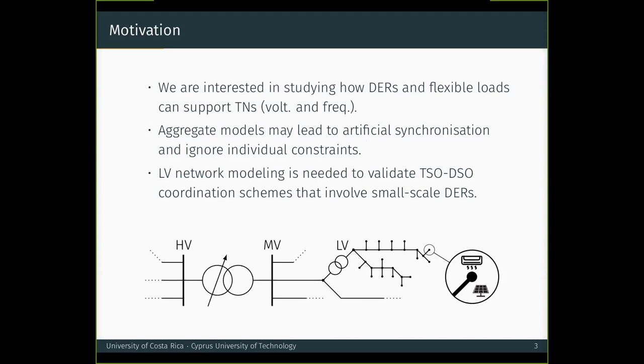This synchronization might be due to the fact that with an aggregate model, the signal would arrive at the same instant and the response of the aggregate model might also take place at just one instant. And these constraints might be, for example, for a PV unit, its terminal voltage and its position in the voltage curve. And for an air conditioning unit, it might be the temperature and how close it is to user defined limits. For that reason, we strongly believe that low voltage network modeling is needed to validate TSO-DSO coordination schemes that involve small scale DERs.